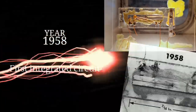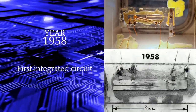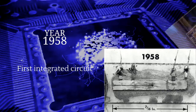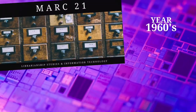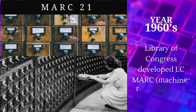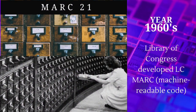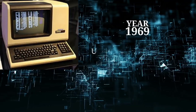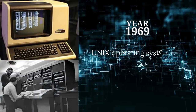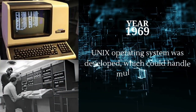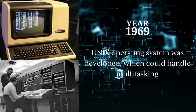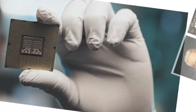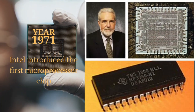On September 12, 1958, Jack Kilby, a Texas Instruments engineer, invented the integrated circuit. The Library of Congress developed MARC in the 1960s. UNIX, a multi-user multitasking operating system, was developed by Bell Laboratories in 1969.